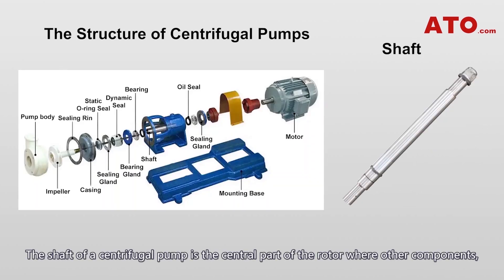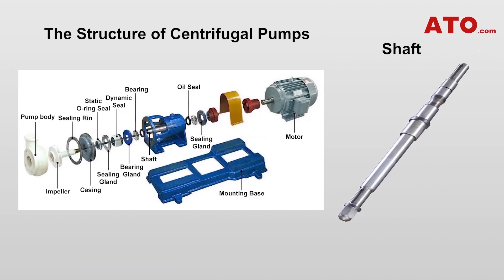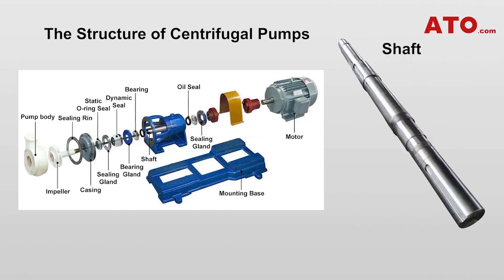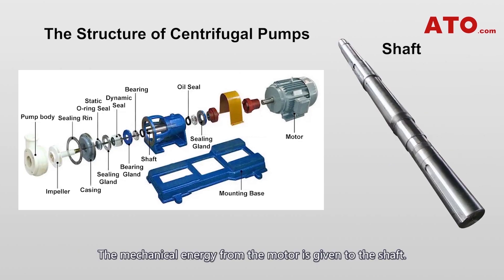The shaft of the centrifugal pump is the central part of the rotor, where other components including the impellers, the shaft sleeves, and the bearings are installed. The mechanical energy from the motor is given to the shaft, and the shaft delivers this power to the impeller to rotate.